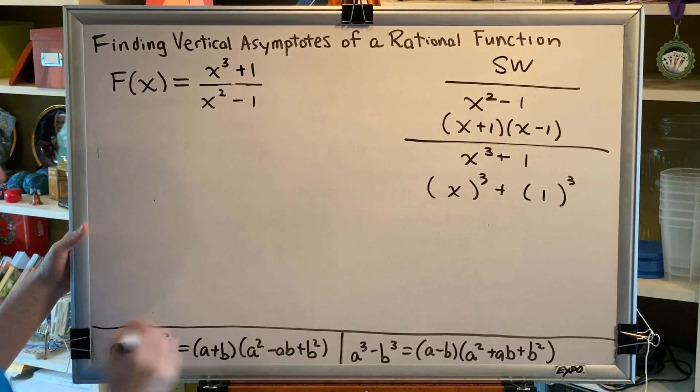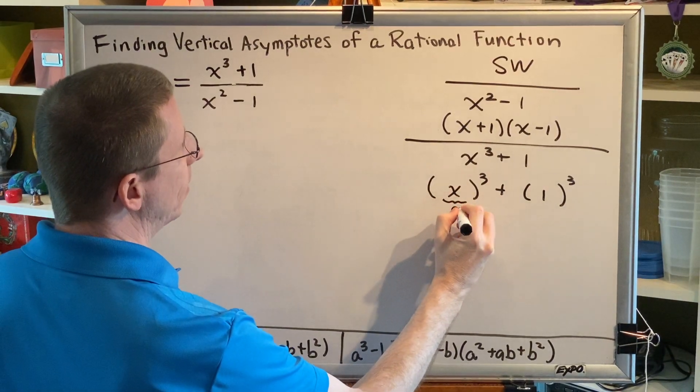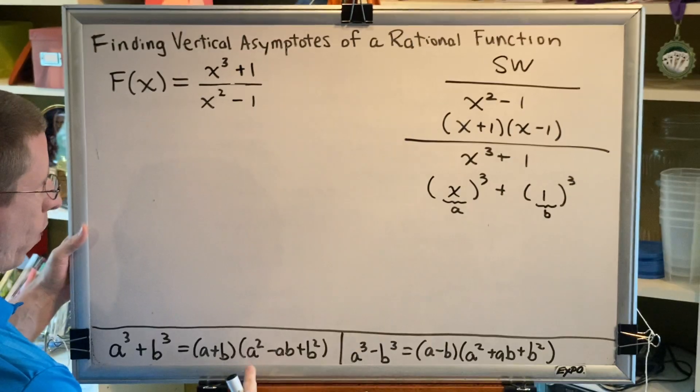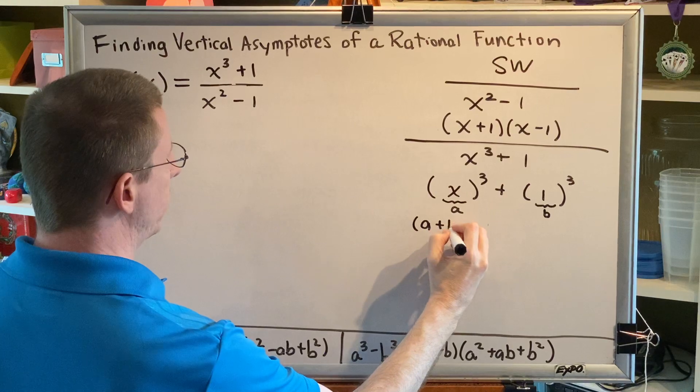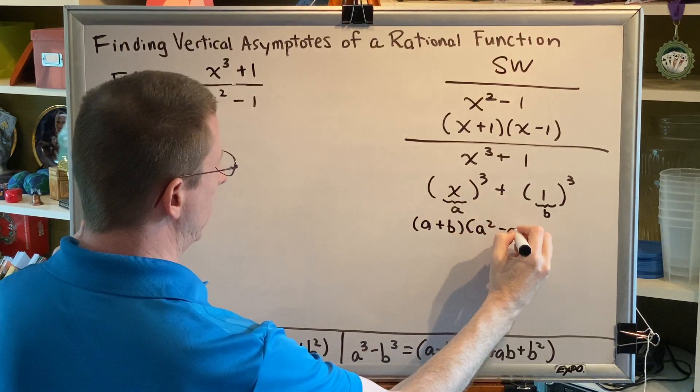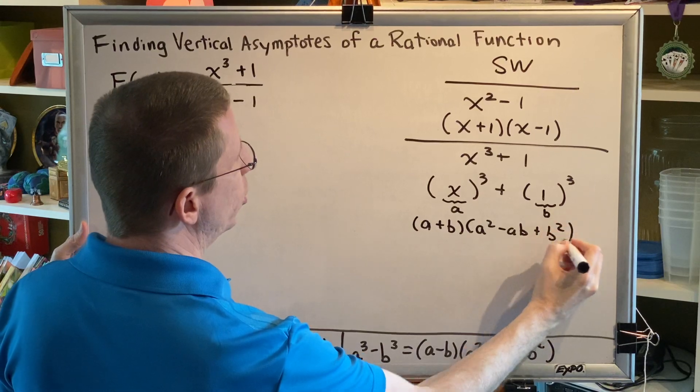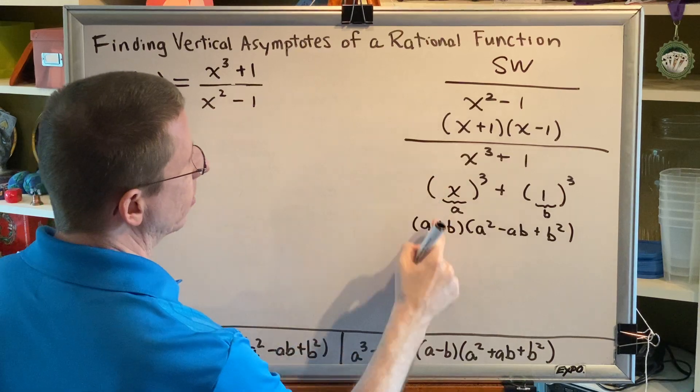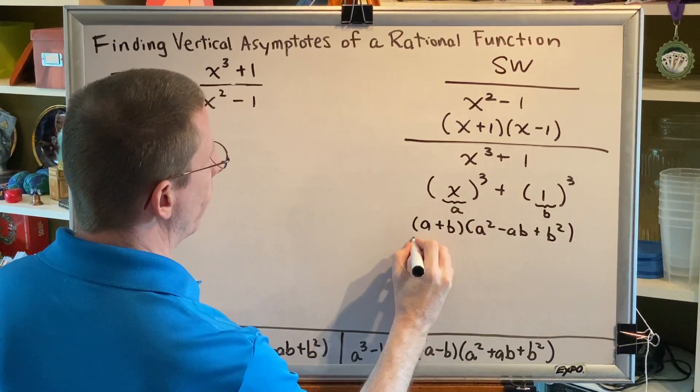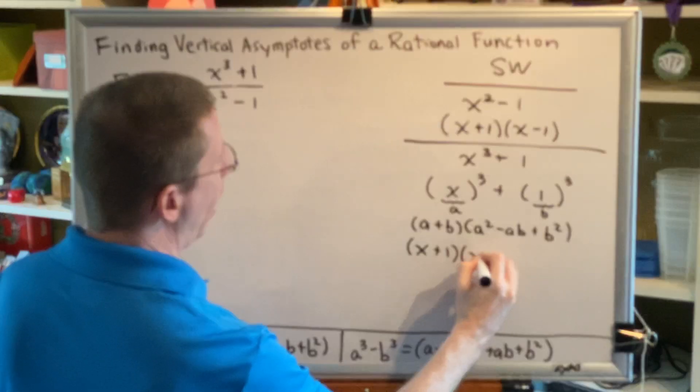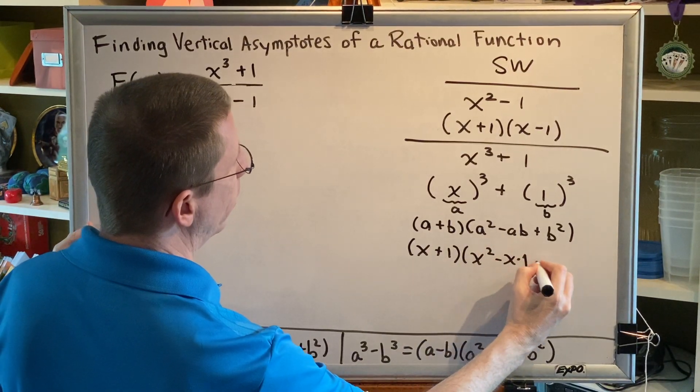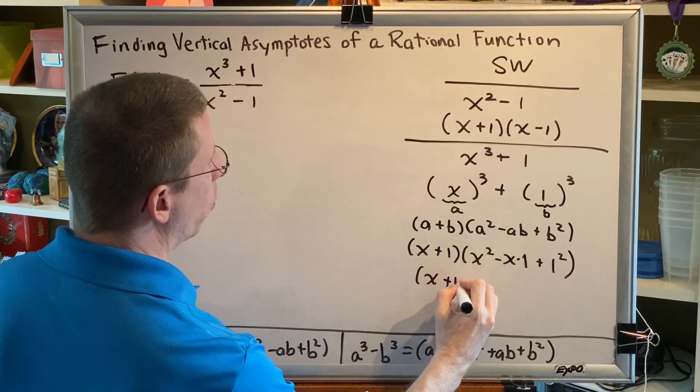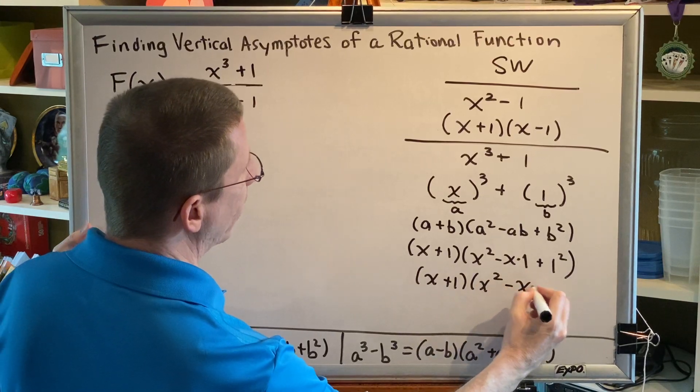So, we'll use our sum of cubes factoring formula, where a is x, and b is 1. And when we factor, we're going to get what we have on the right-hand side here. a plus b, a squared minus ab plus b squared. We just have to plug into our factoring formula. Everywhere we see an a, we'll put x. Everywhere we see a b, we'll put 1. So, we get x plus 1, x squared minus x times 1 plus 1 squared. Simplifying this, we get x plus 1, x squared minus x plus 1.